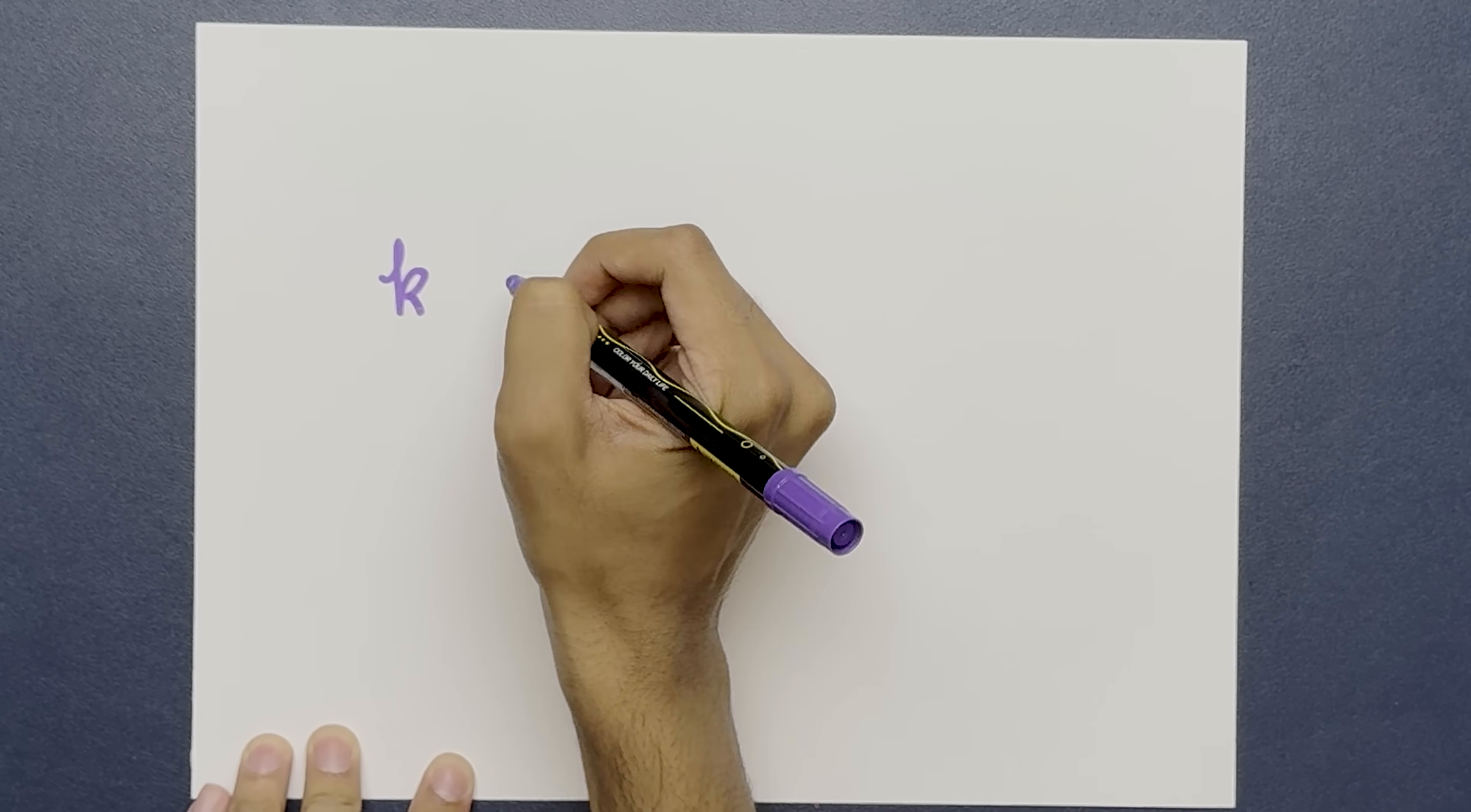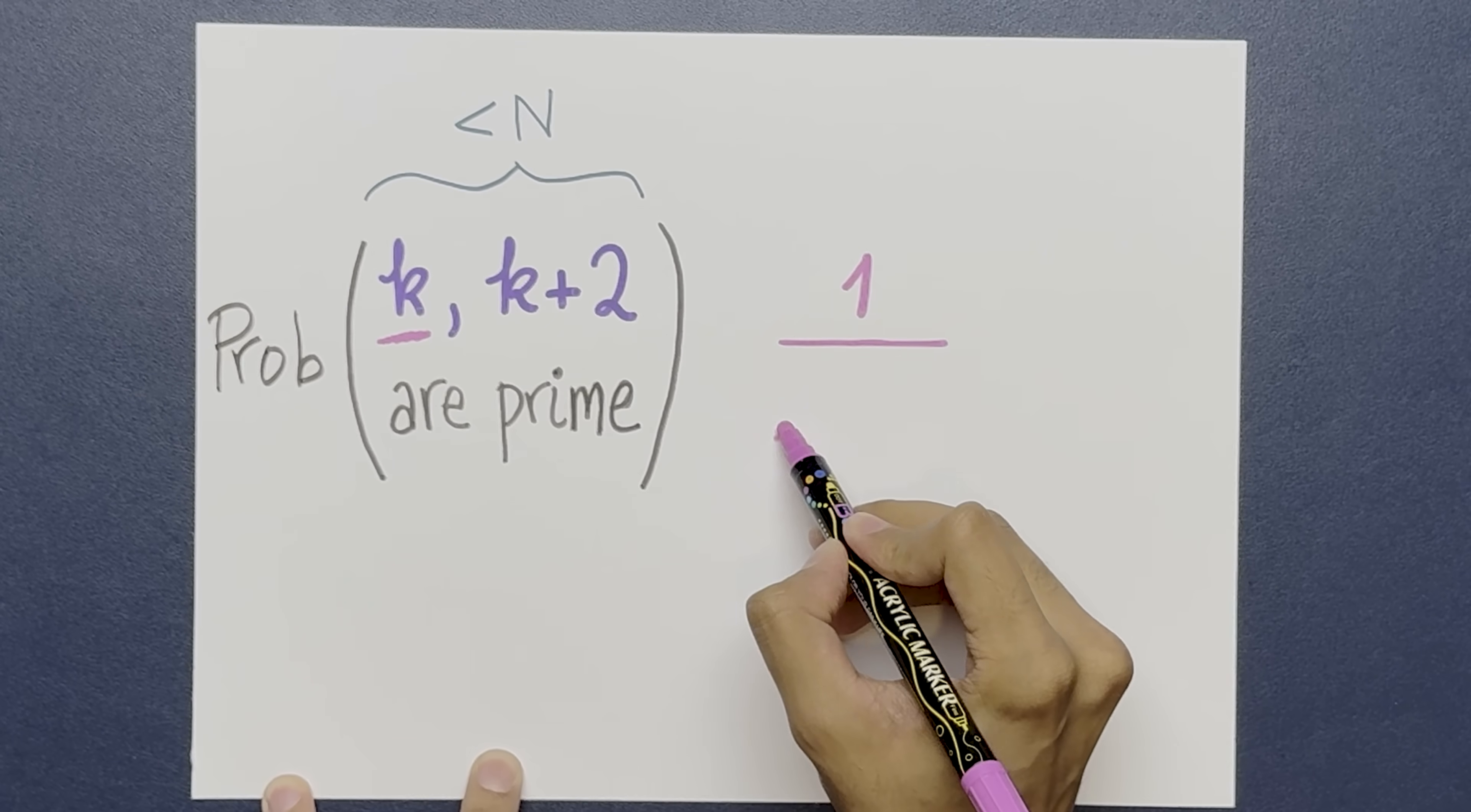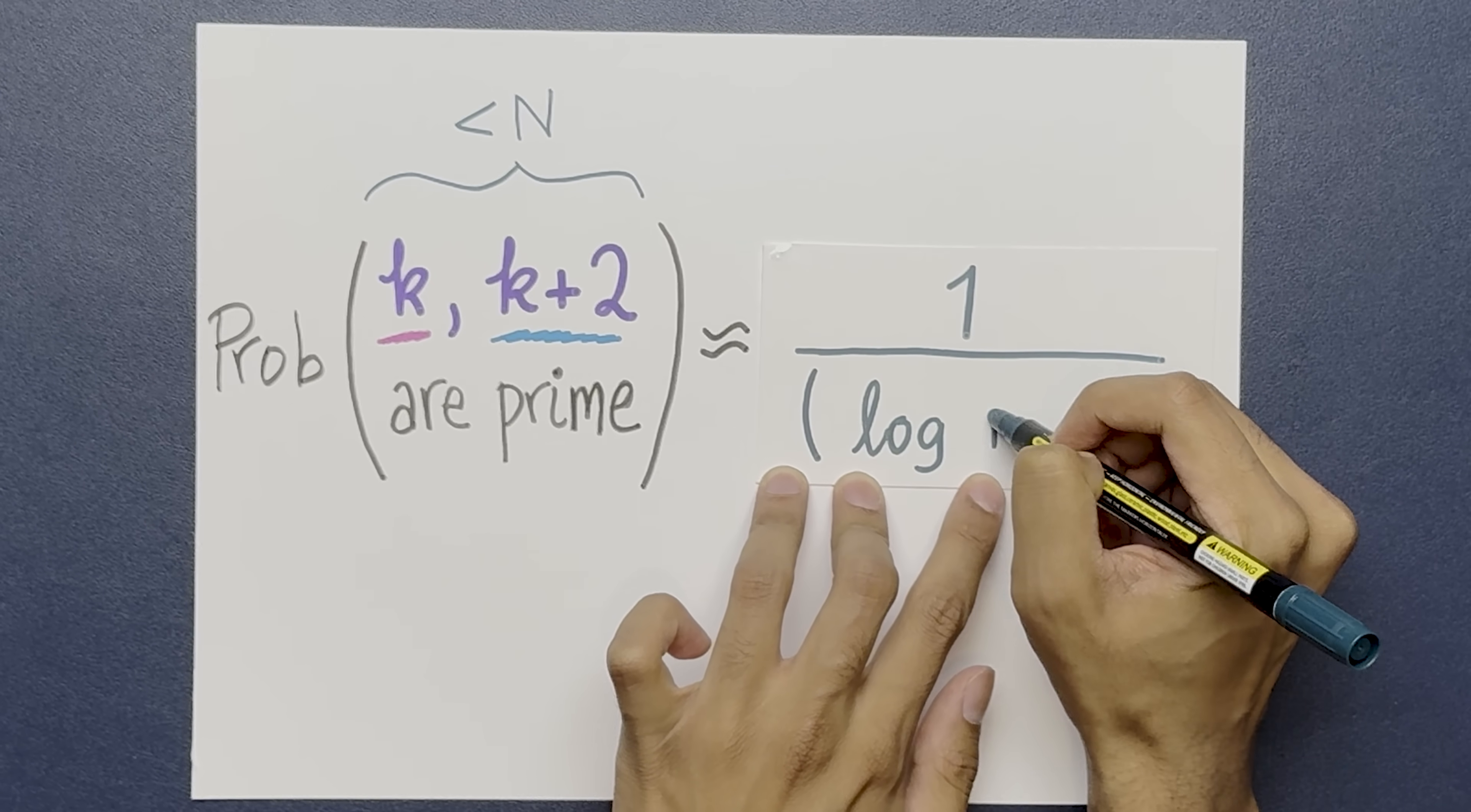Suppose I pick two numbers less than n, which are two apart. Say k and k plus 2. What's the probability that both of these numbers are prime? Well, the probability that k is prime is around 1 over log n. The probability that k plus 2 is prime should be 1 over log n. The probability that they're both prime should be the product of these two things, i.e. 1 over log n squared.